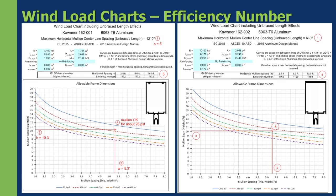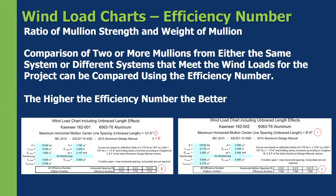You may have noticed there's another piece of information on these charts — the efficiency number. We're going to look at two different mullions for the same system. The first chart we've been using is for the Connier 162001, which has an efficiency number of 1172. We could also use the 162002, which has an efficiency number of 1169. The efficiency number is the ratio of mullion strength to mullion weight — the larger the number, the more capacity you're getting out of the mullion for a lesser weight.